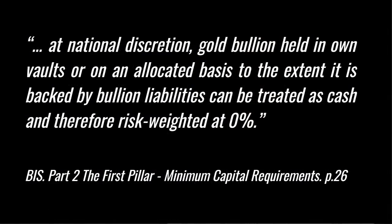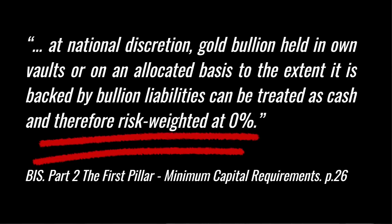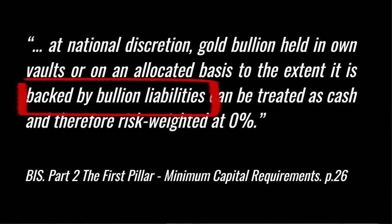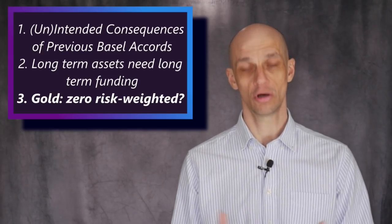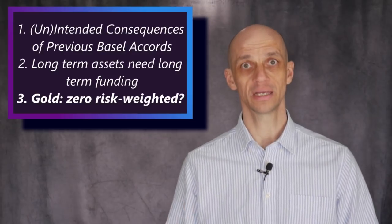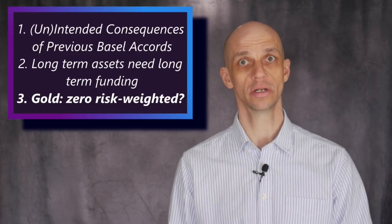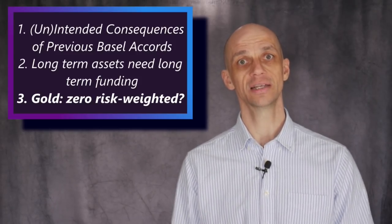The BIS have also stated that at national discretion, gold bullion held in own vaults or on an allocated basis, to the extent it is backed by bullion liabilities, can be treated as cash and therefore risk-weighted at 0%. This seems promising for allocated gold, however it is weighted at cash because it is backed by bullion liabilities — i.e. a short position against the future price of the metal. So on one hand the bank is long, and on the other hand the bank is short, leaving a net neutral position at zero risk.